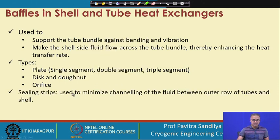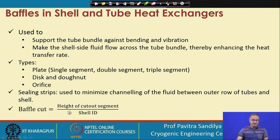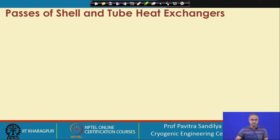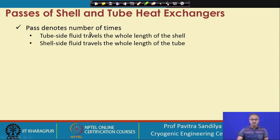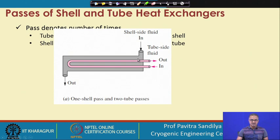Sealing strips are used to minimize channeling of fluid between the outer row of tubes and the shell. Baffle cut is defined as the height of the cutout segment to the shell inner diameter. A pass denotes the number of times tube side fluid or shell side fluid travels the whole length of the shell or tube. In a configuration with one shell pass and two tube passes, the shell side fluid travels once while the tube side fluid traverses the length twice.